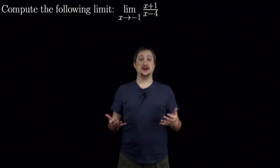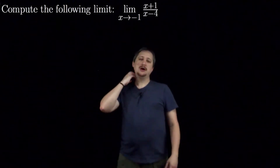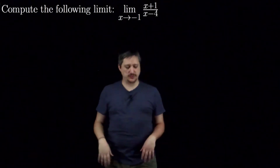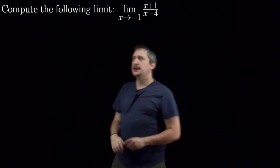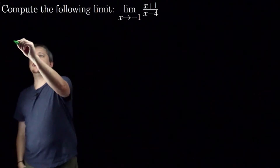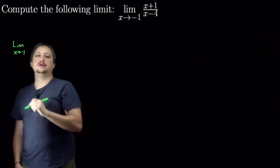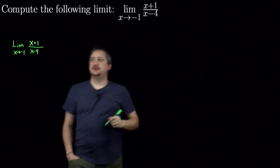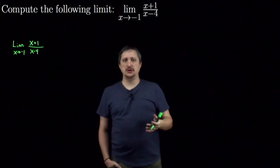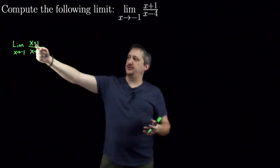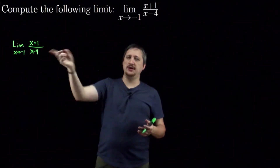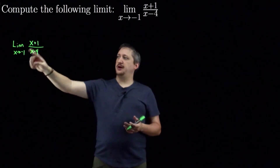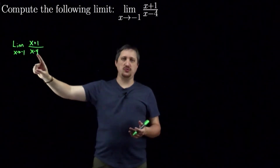Here we're going to be applying the limit algebra rules to solve a limit — in this case we're looking at a nice fraction, so we'll be applying the divisor algebra rule as the primary rule. I'll start by rewriting the limit: I have the limit as x goes to negative 1 of (x plus 1) over (x minus 4). Remember we can split this fraction into the limit of the top over the limit of the bottom as long as the bottom's limit is not 0. As x goes to negative 1, the bottom goes to negative 5, so I'm okay.